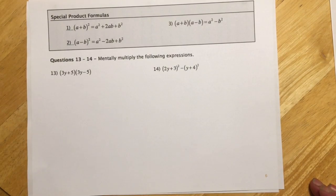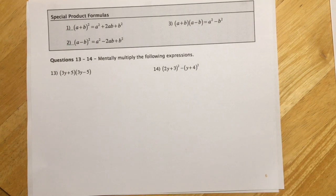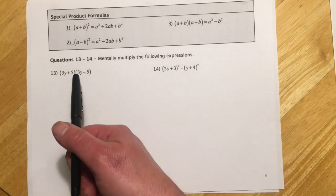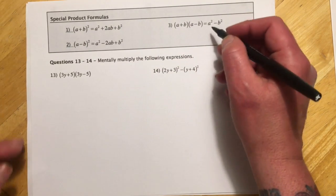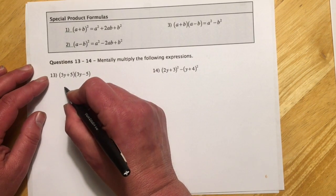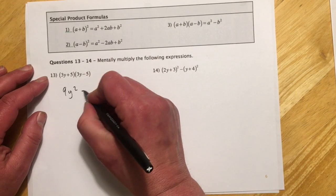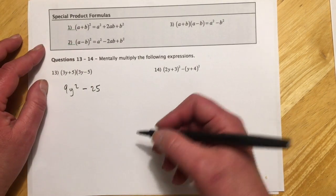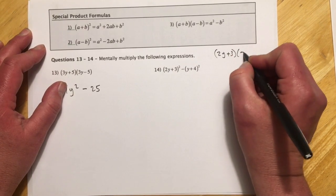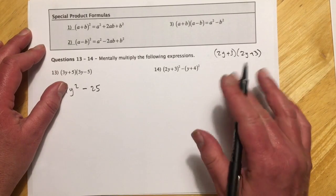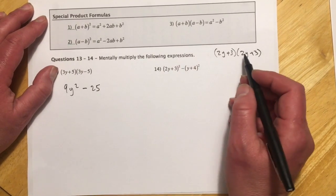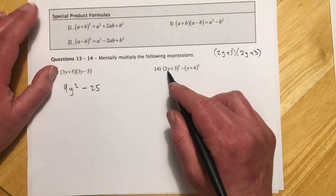The other thing in this section was special products — these ones we're supposed to mentally do. If you're not comfortable with them on the test, you can absolutely FOIL and do out all the steps. The idea is to recognize it as A plus B times A minus B, which always comes out A squared minus B squared. So it's just 3y times 3y for 9y squared, then 5 squared for minus 25. For the perfect square problems, if it's better to write out 2y plus 3 twice and do all the steps, that's totally fine.